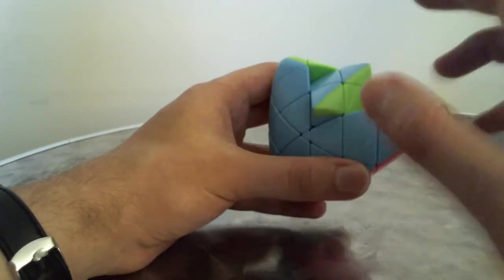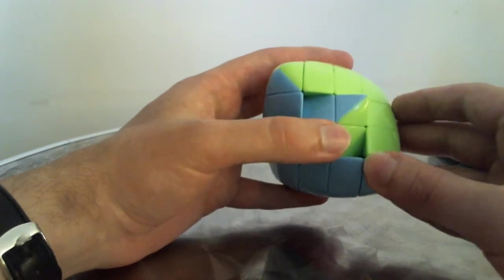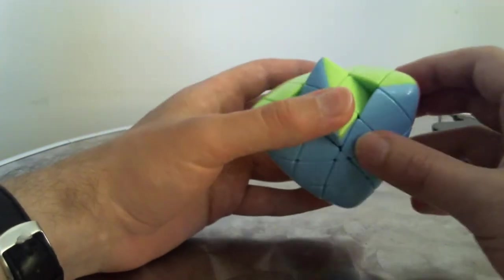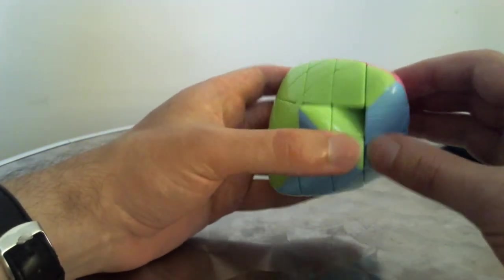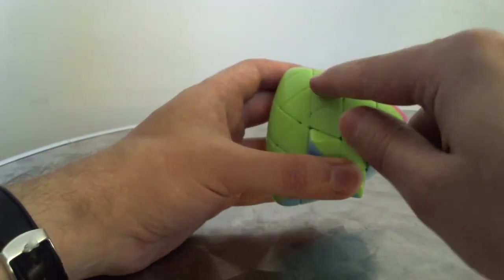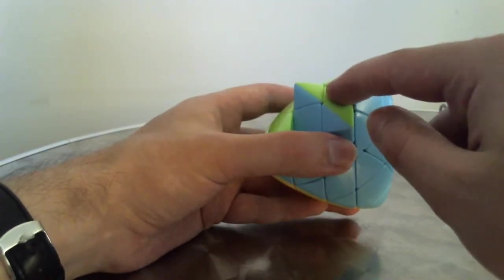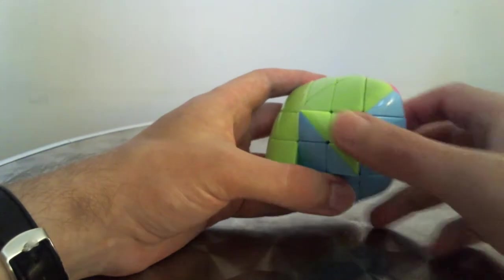First I look at this center and I determine—let's see, I want to get this green piece swapped with this green piece right here.